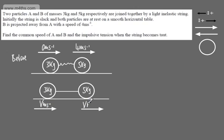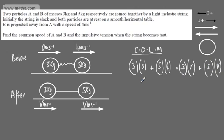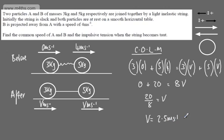Using conservation of linear momentum: 3V + 5V = 0 + 5 × 4, so 0 + 20 = 8V. Dividing both sides by 8: V = 20/8 = 2.5 meters per second, or 5/2 meters per second. So A and B share a common speed of 2.5 m/s after the string becomes taut.